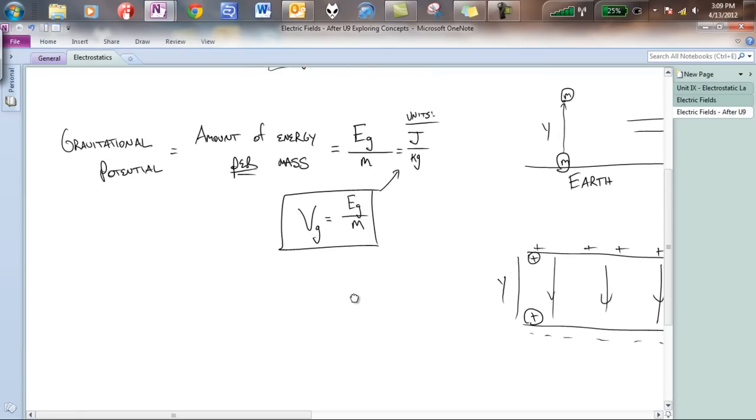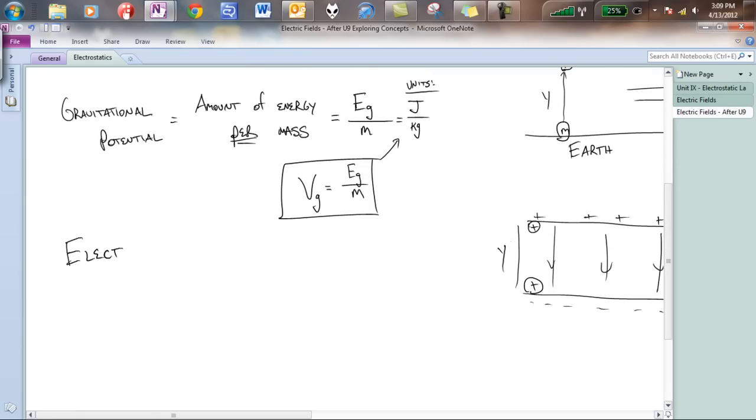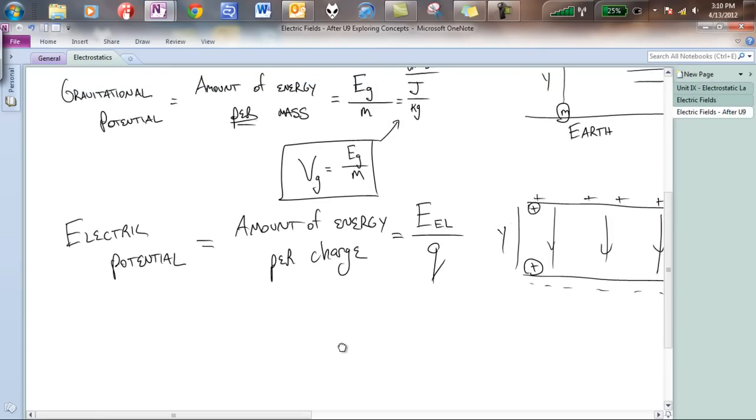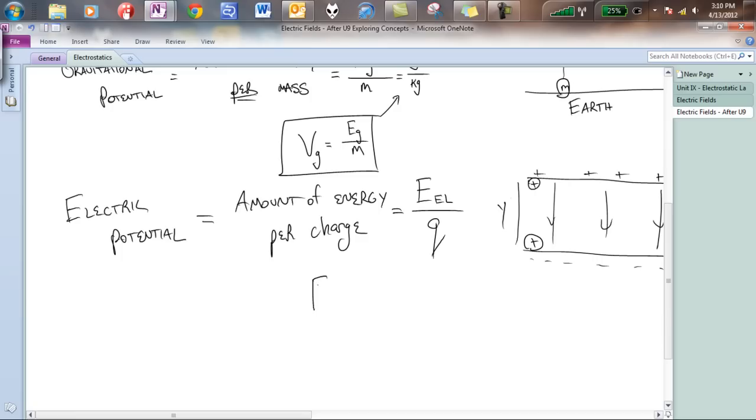So, of course, with the parallel understanding, if we looked at electric potential, this is, again, paralleled with the amount of energy, but instead this is going to be per charge. And the way that this is going to be calculated is, again, EEL per Q. And so, if we had to write this out, this is going to be VEL, sometimes just V, and it is going to be EEL over Q. So, that is going to be our new unit. Notice how, again, how similar these two equations are, EG over M versus EEL over Q.